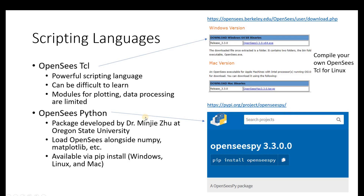A few years ago, Dr. Minjie Zhu here at Oregon State University developed a Python package for OpenSees that allows you to load OpenSees directly alongside NumPy, Matplotlib, and the many other Python packages that are available. Installing OpenSees.py — the Python version of OpenSees — is a very simple pip install. It's available at PyPI, version 3.3.0, same as the executable. Just pip install OpenSees.py into your environment, whether you're using Anaconda or Python.org.